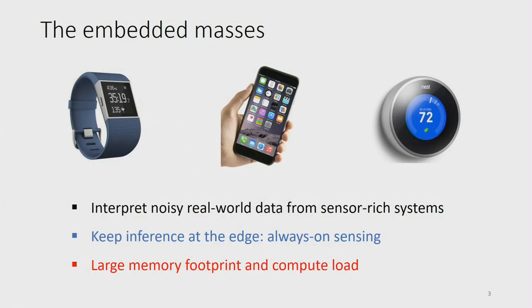Deep learning has become quite synonymous with very high-performance hardware. But what about the embedded masses? Mobile and IoT devices are probably the largest and fastest-growing computing platforms on the planet. Neural networks are a really important technique for many of their use cases, enabling devices to interpret the world around them through sensor data. Currently, these devices perform neural network inference by offloading to the cloud, but this incurs energy, latency, and security overheads — so there's a big push to move inference back onto the device. Always-on sensing applications such as keyword spotting are a big driver for this.